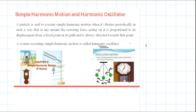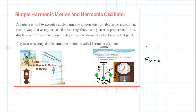That force is called the restoring force F. The force is always directed toward the equilibrium position. When the bob is displaced in one direction, the force acts in the opposite direction to bring it back. This restoring force is directly proportional to the displacement from the equilibrium position — that is, F is proportional to x, but in the opposite direction, so F is proportional to minus x.